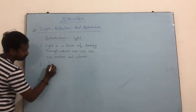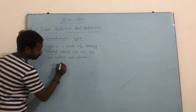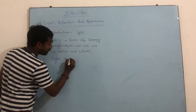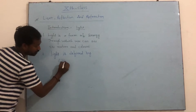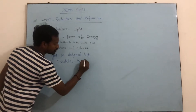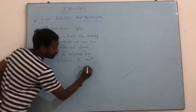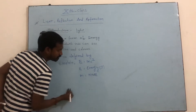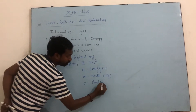Light is defined by Einstein. The most famous equation is E equals MC squared. E stands for Energy, measured in Joules. M stands for Mass, measured in kilograms. C stands for the Speed of Light.